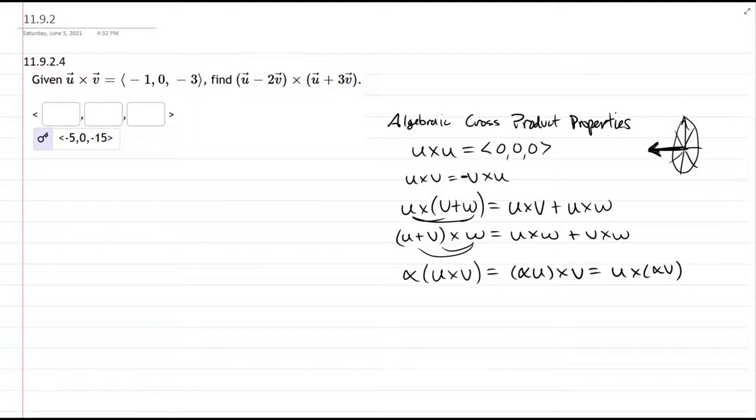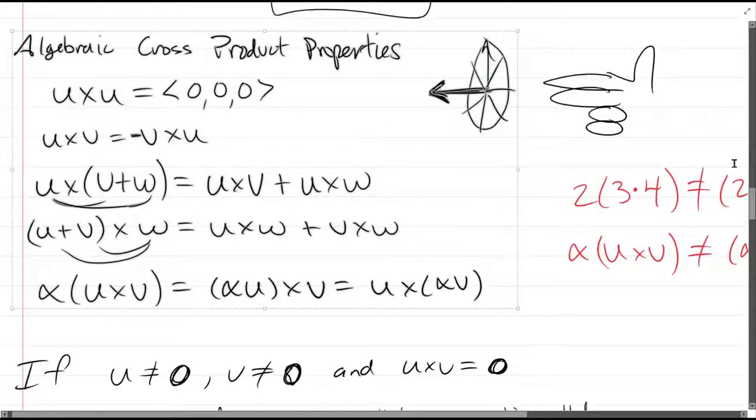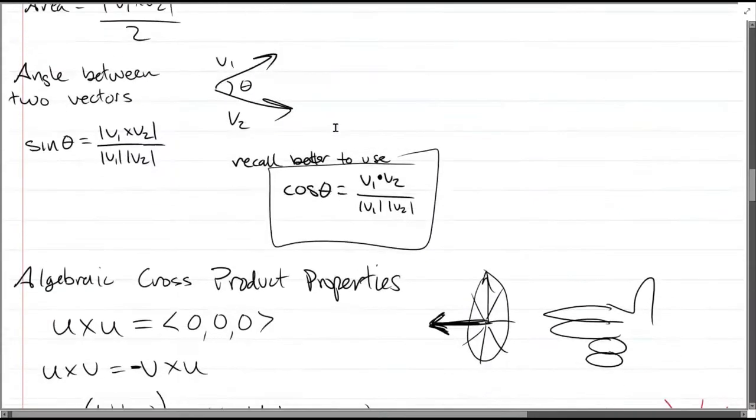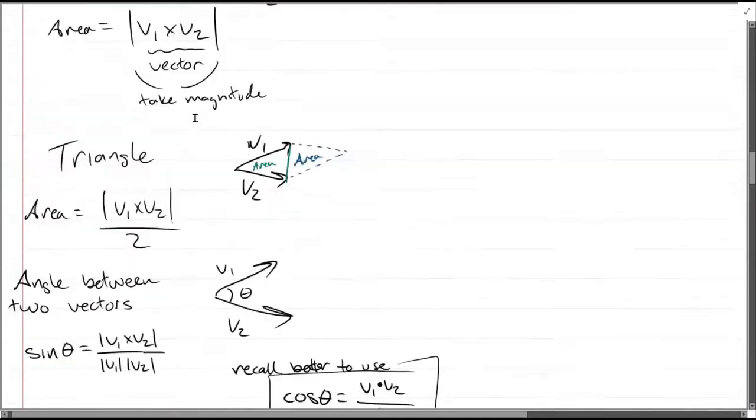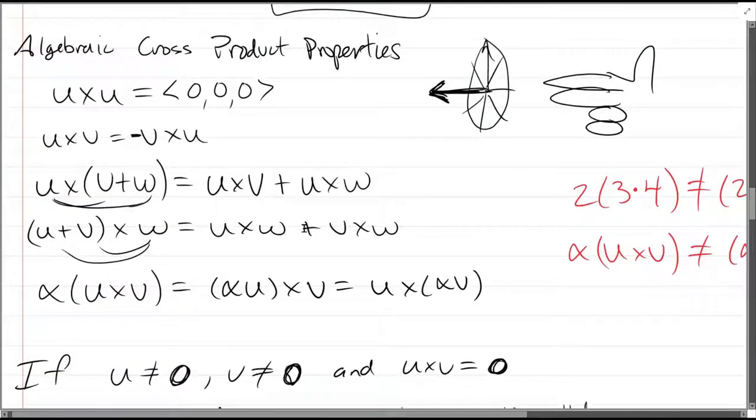You can also get it right here in chapter 11 and 11.7 cross product section notes right here. Here's a bunch of other stuff if you need it too, all around, but we're going to use these properties.